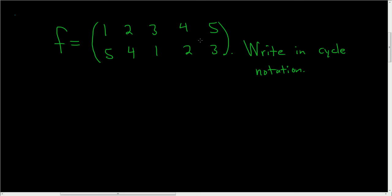So we have a permutation. This is an element in the symmetric group of degree 5 and we're being asked to write it in cycle notation, so solution.